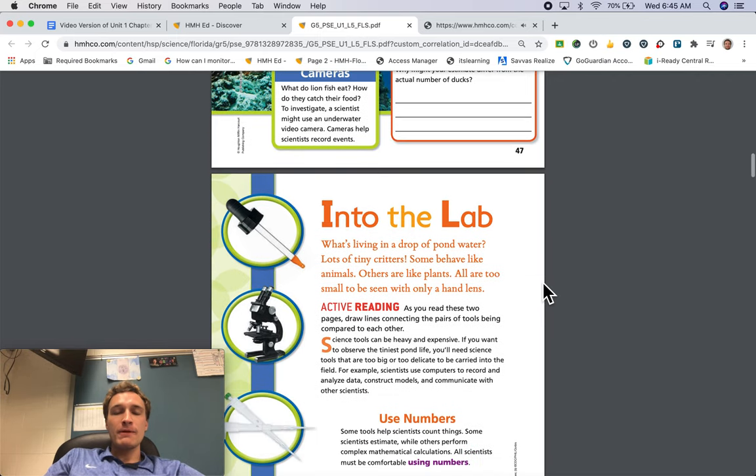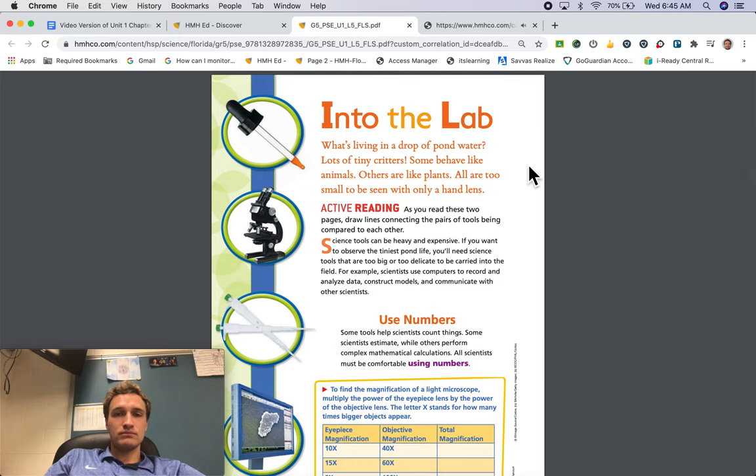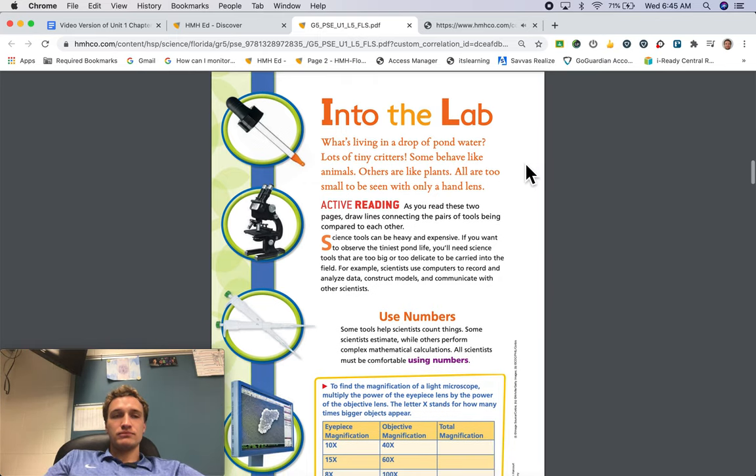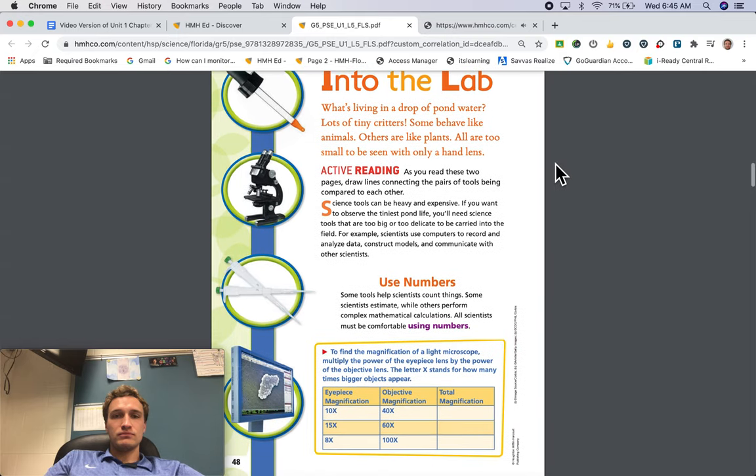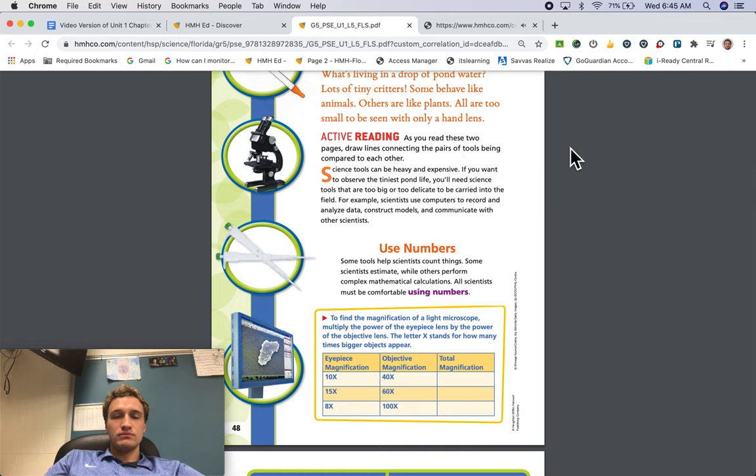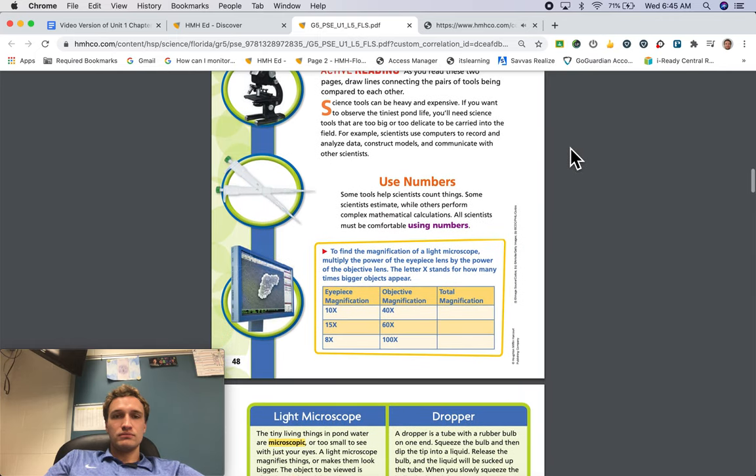Into the lab. What's living in a drop of pond water? Lots of tiny critters. Some behave like animals. Others are like plants. All are too small to be seen with only a hand lens. Active reading. As you read these two pages, draw lines connecting the pairs of tools being compared to each other.